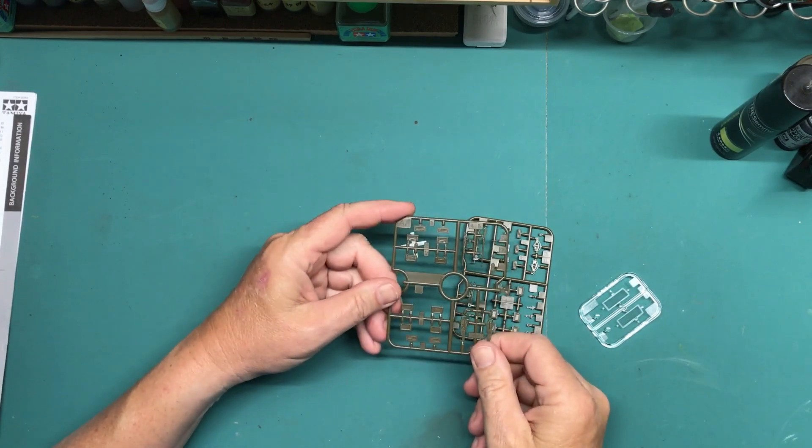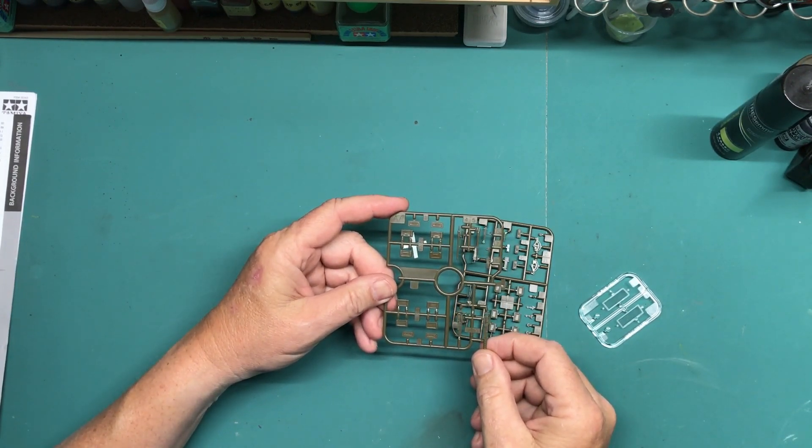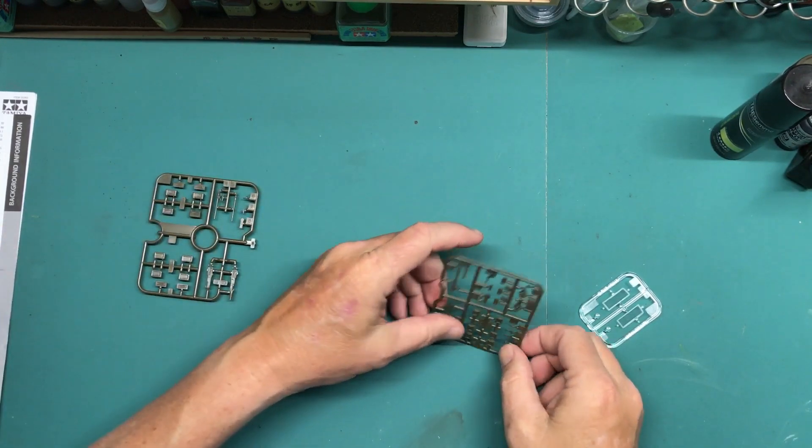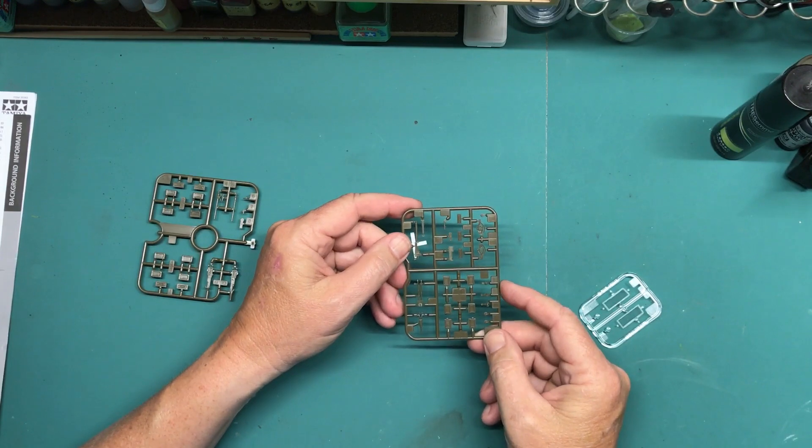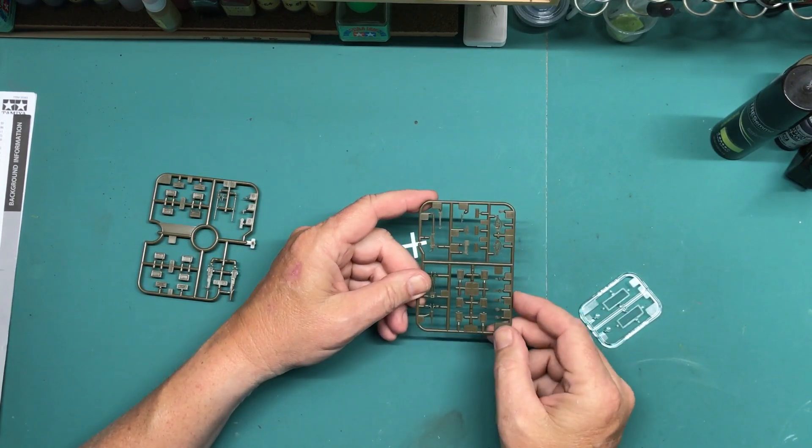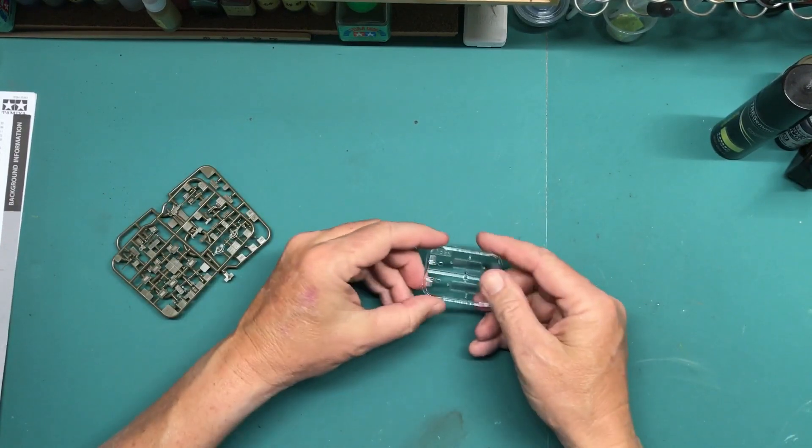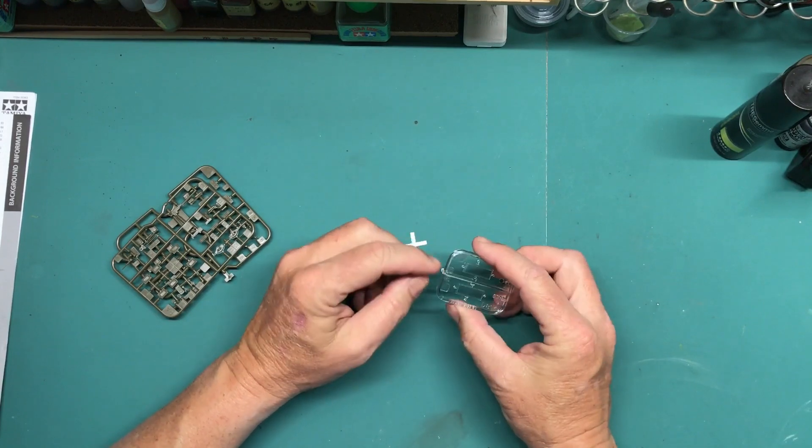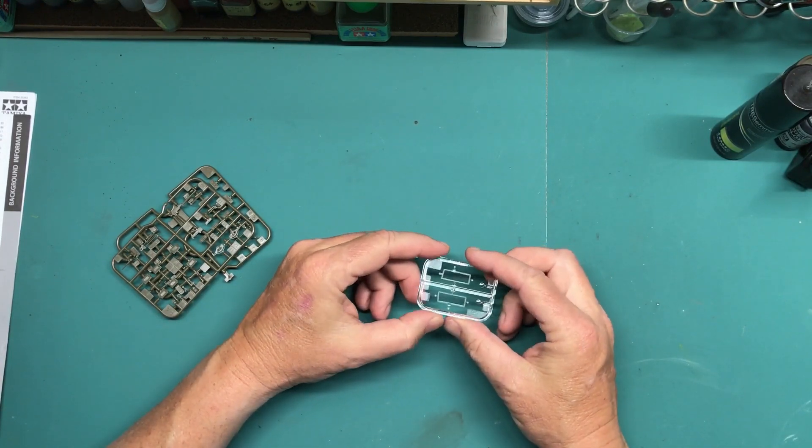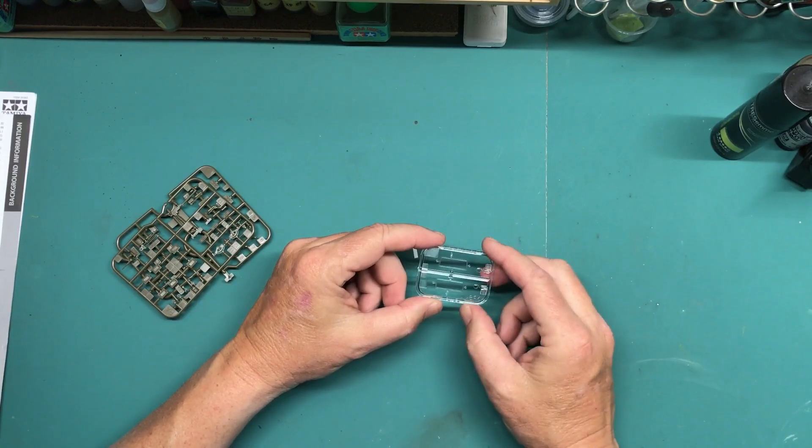Then we have sprue AA, which is ammo boxes and 50 cal machine gun. Then we got sprue BA, which is 30 caliber machine gun, a tripod, more ammo cans for that, and a mount. And then sprue F, which is the clear parts, glass, and a couple of headlight lenses.